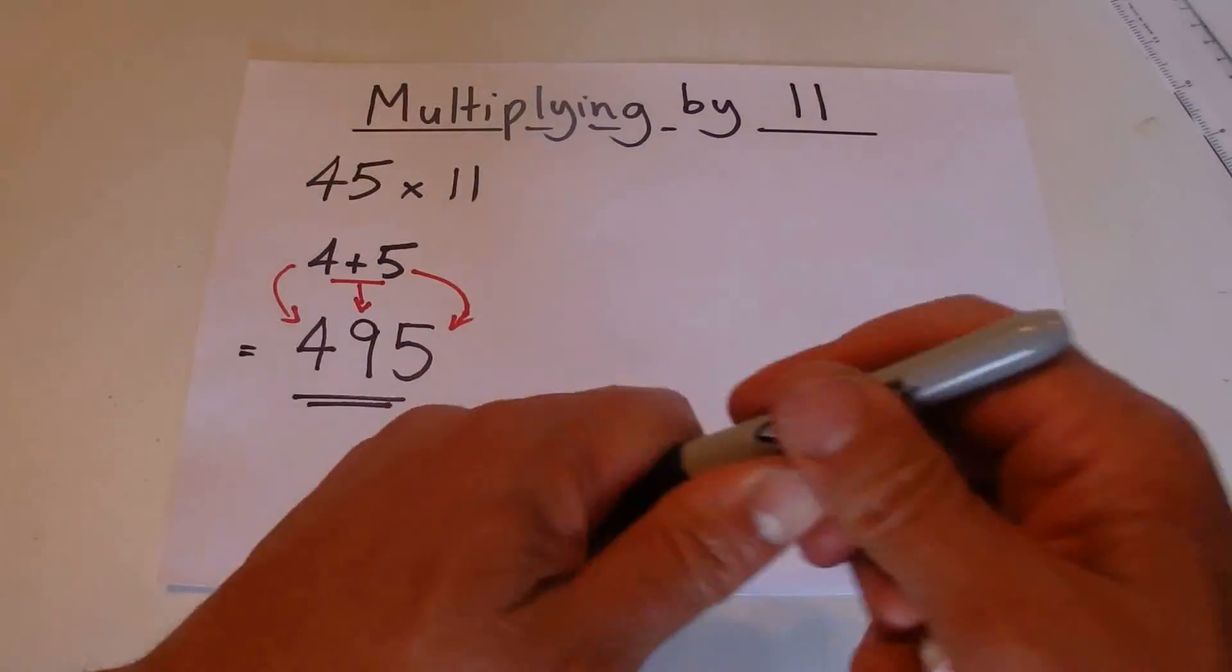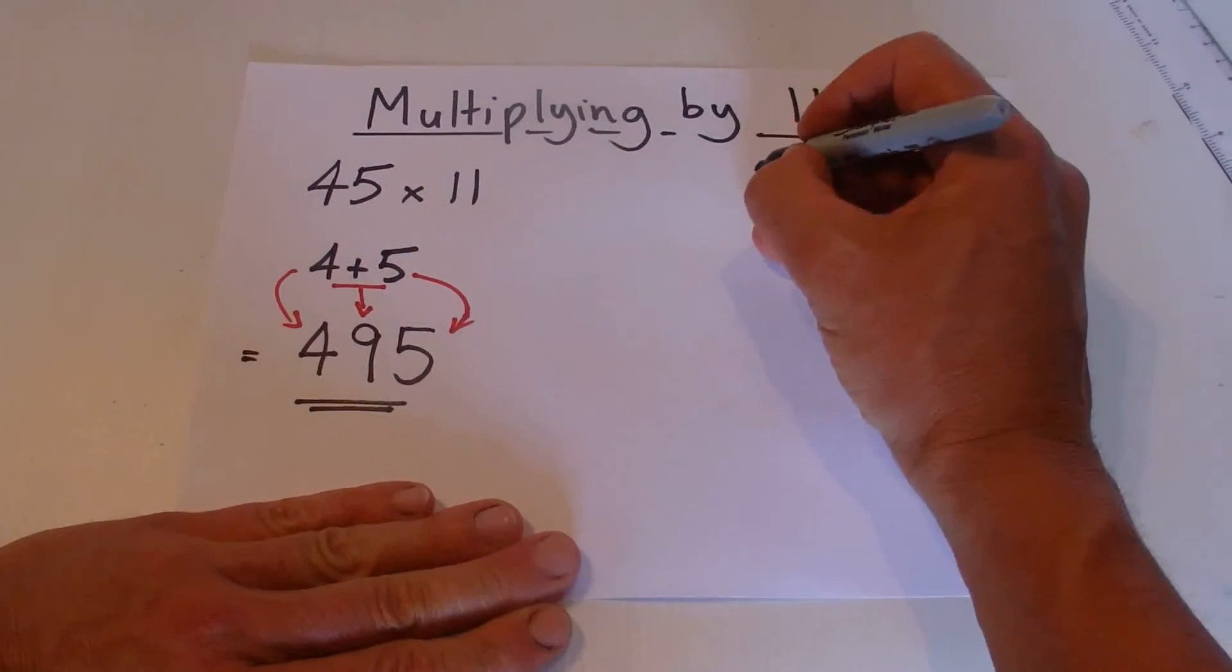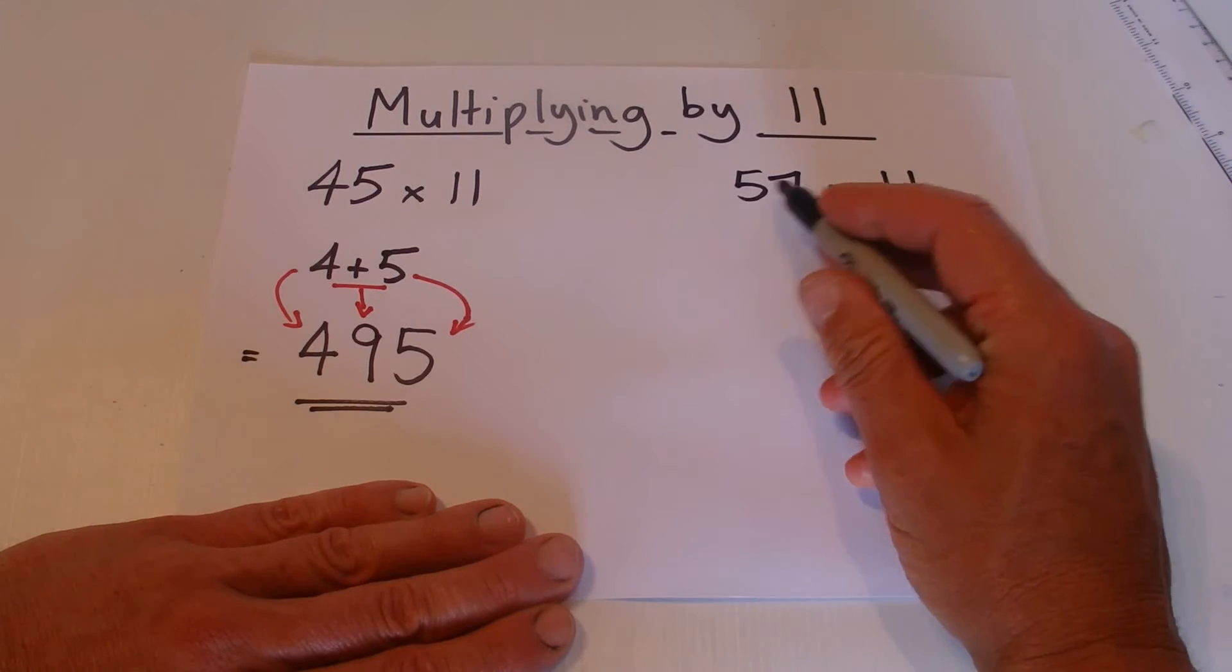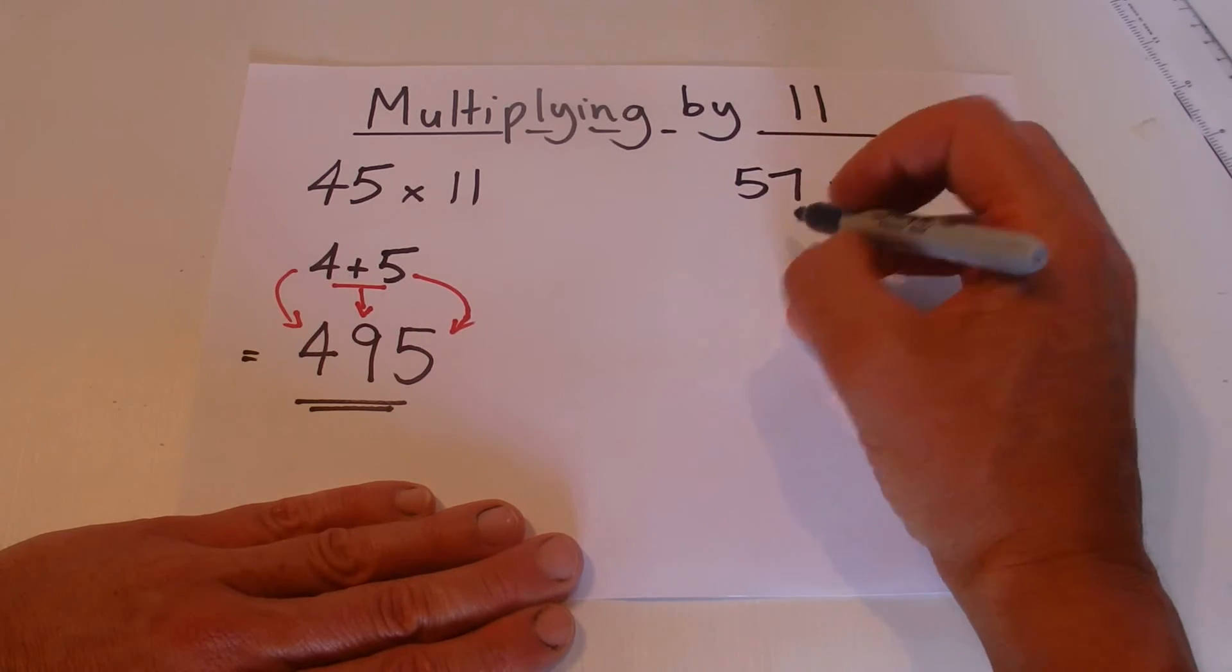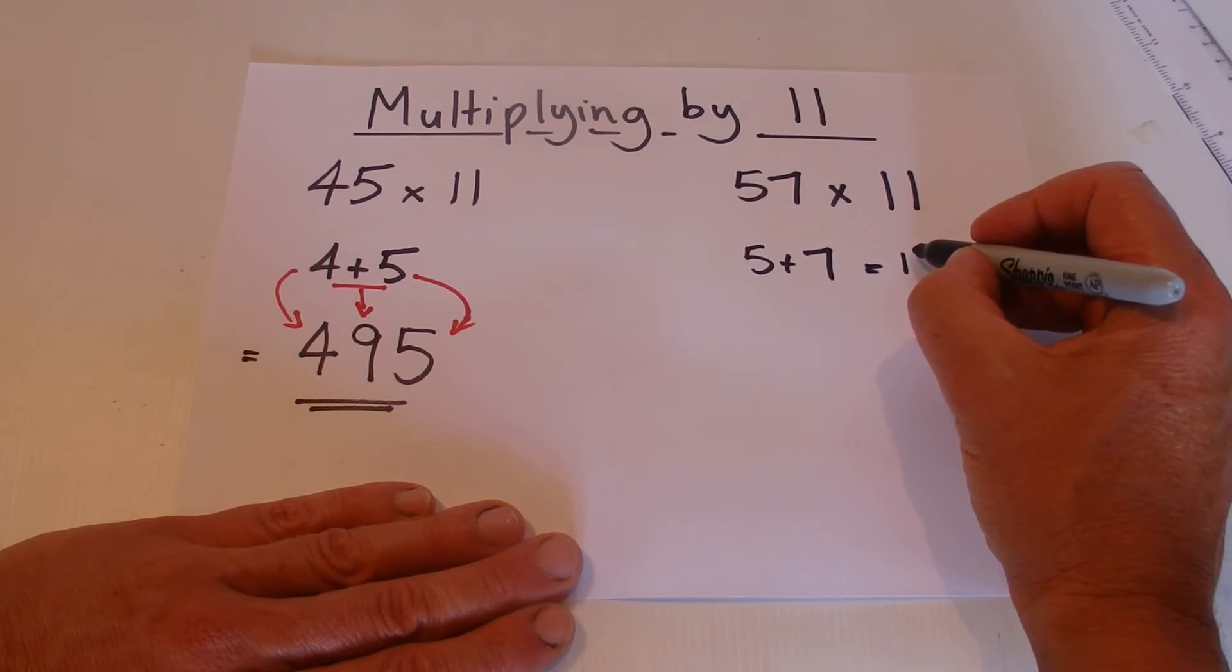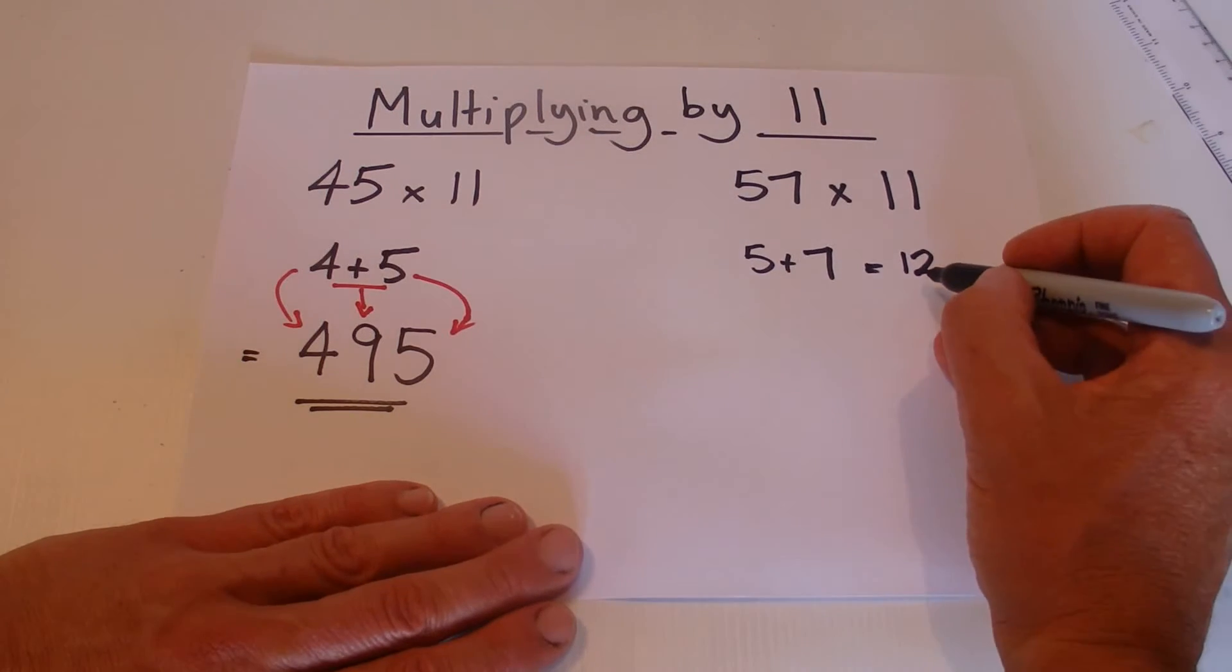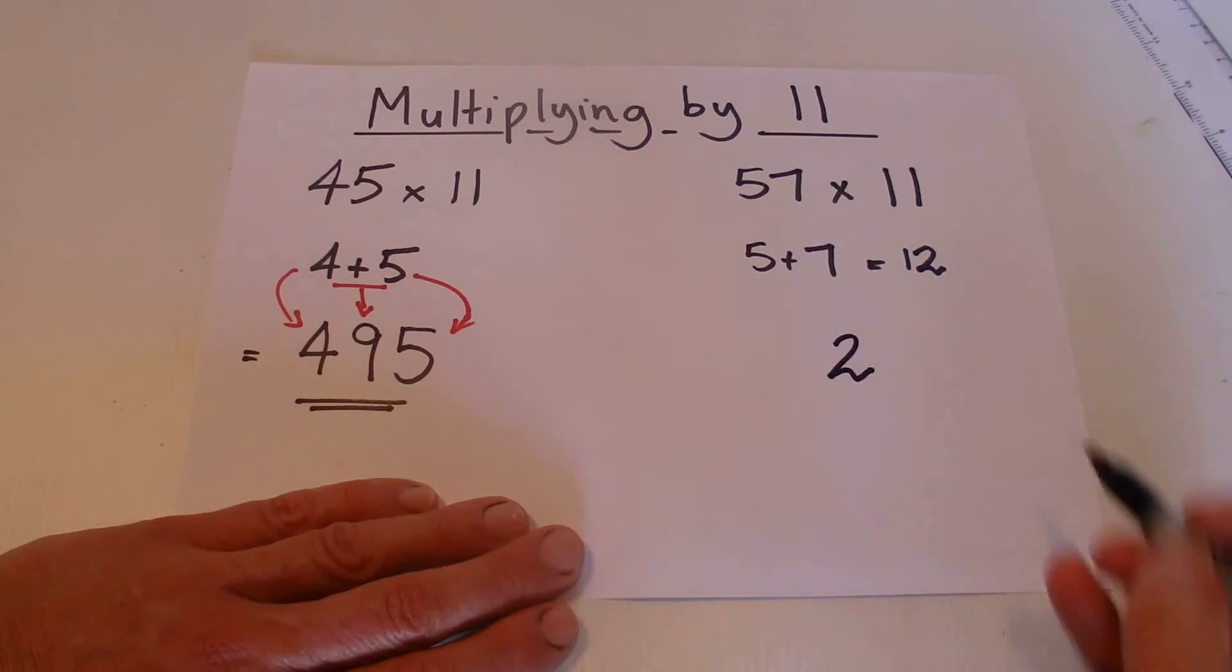Now say for instance you're multiplying by a different number, and when you add the two digits together, then you come up with a number that is greater than 9, so you've got a two-digit number. In this case say 57 times 11. Well in this case if you add the 5 and the 7 together, that gives you 12, but you don't put the whole 12 in the middle of your answer. You just pick up the 2 from the right hand side and put that in the middle of your answer.